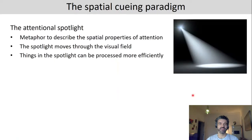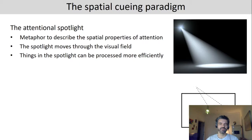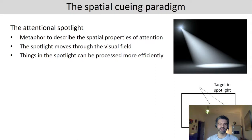From these cueing paradigms, the metaphor of an attentional spotlight was derived, describing the spatial properties of attention. Attention is like a spotlight that moves through the visual field. If you tell people where to expect the target — for example, with an arrow — they can shift their attention there, and then the target is in the spotlight. Anything in the spotlight can be processed more efficiently. Neurally, this means more resources are dedicated to processing anything at the location indicated by the cue.